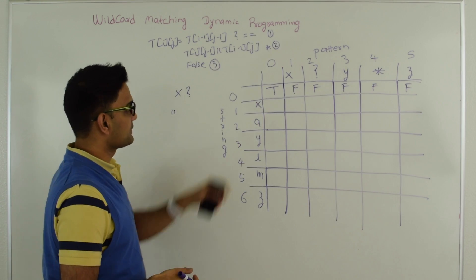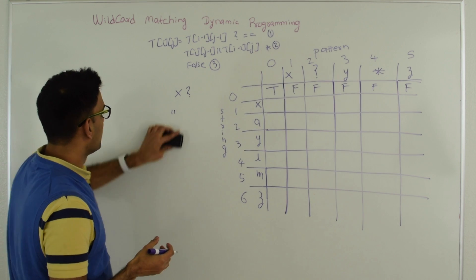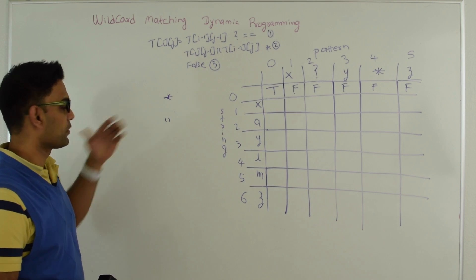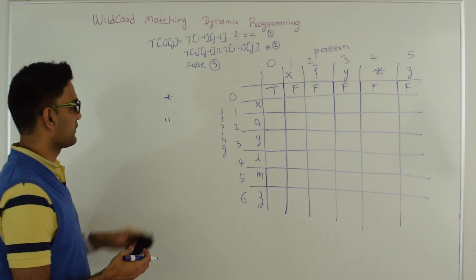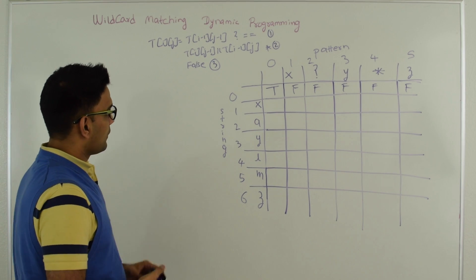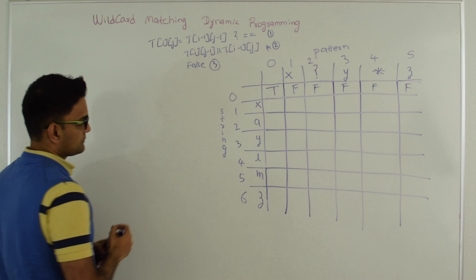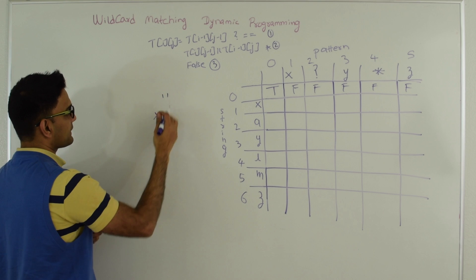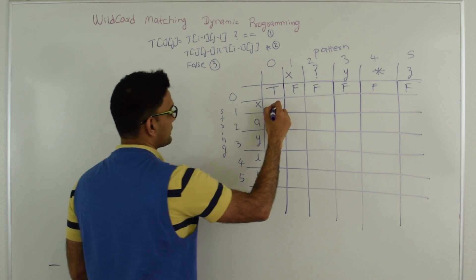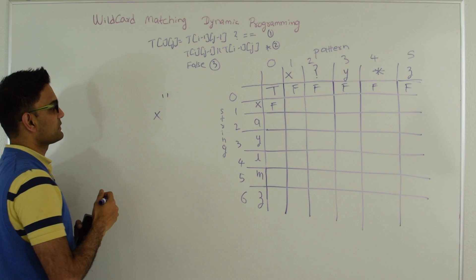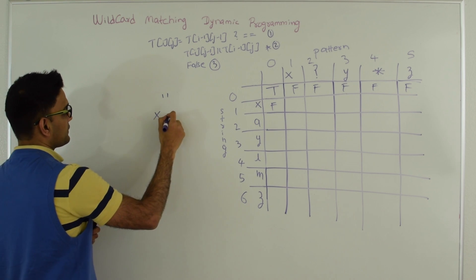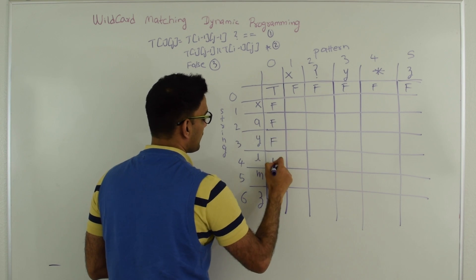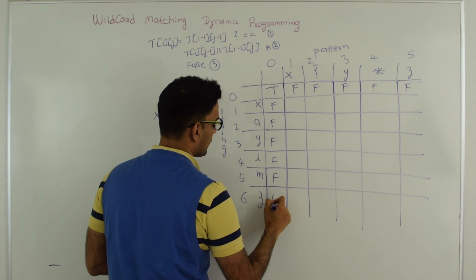The only way T[0][j] can be true is if that character in the pattern is a star, because star can match an empty string by representing a zero sequence of characters. For the zeroth column: if the pattern is empty and the string is X, they don't match, so that's false. An empty pattern against any non-empty string gives false, so the entire zeroth column is false.